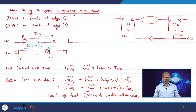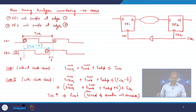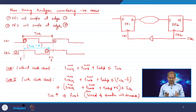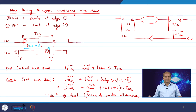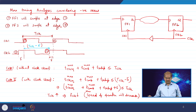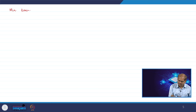To summarize max timing analysis with negative skew: flip-flop 1 samples at edge 1, flip-flop 2 samples at edge 4, and the available time is reduced by delta. The total time period becomes T_clock minus delta, so the left-hand side has more to evaluate by the amount of delta. Since the clock period increases, frequency decreases. Negative skew is not good for speed. Now we move to minimum timing analysis — the hold check — considering negative skew.